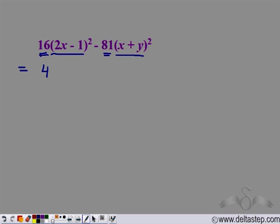Sixteen can be written as four squared. So we have four times two x minus one whole squared. Because this when expanded will give four squared which is sixteen times two x minus one whole squared which is what we have here. Eighty-one is nine squared. So we can write this part as nine times x plus y whole squared.